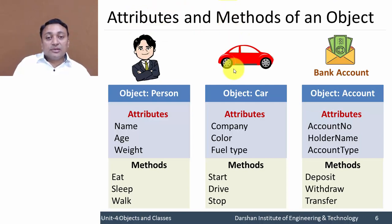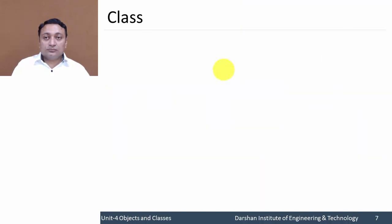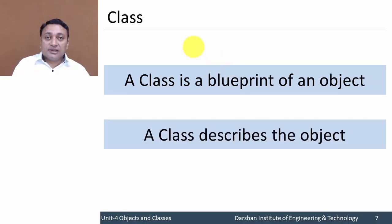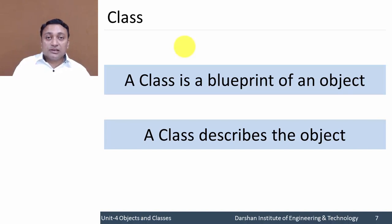Now let us discuss class. A class is a blueprint of an object, or we can say a class describes an object. A class is a collection of similar kinds of objects. Suppose we consider the class of computer students — it will contain objects like student 1, student 2, student 3.